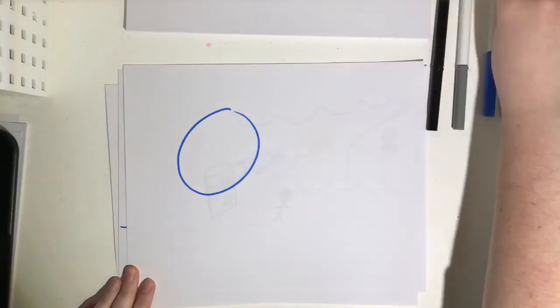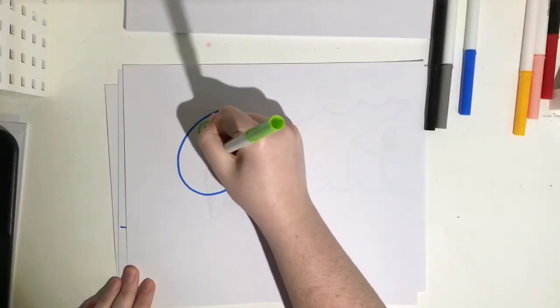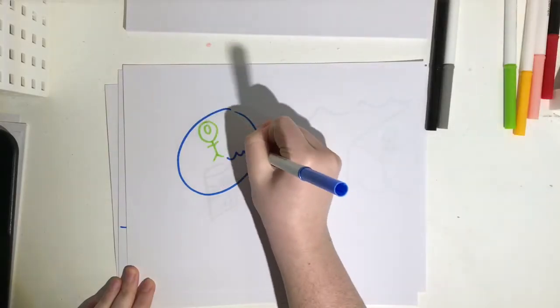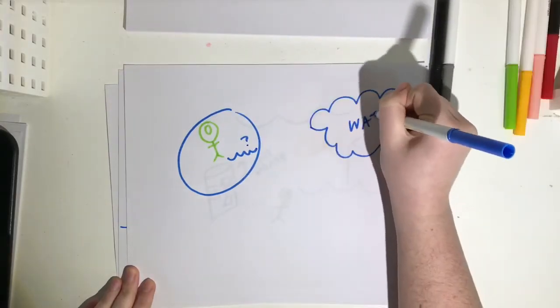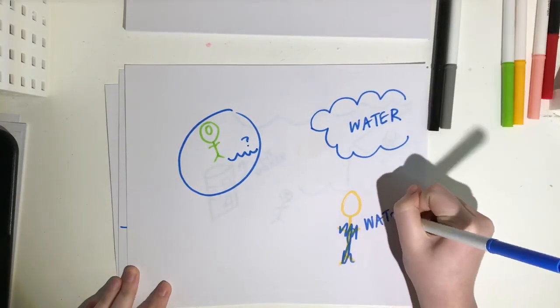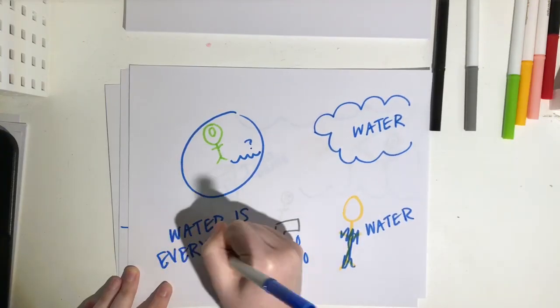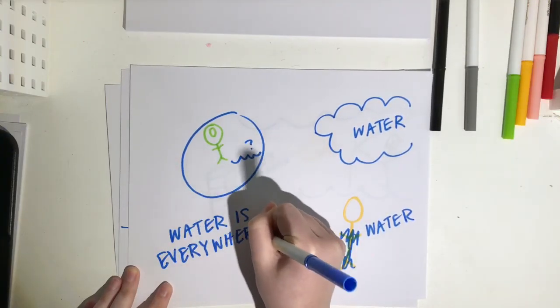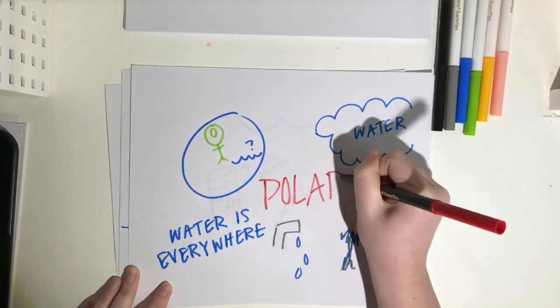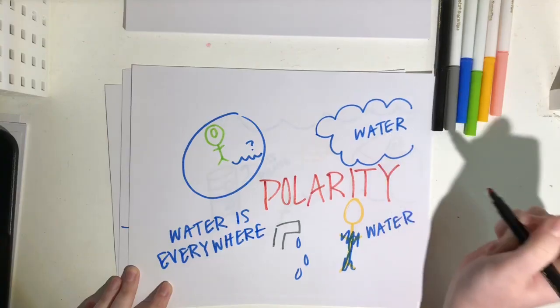When scientists look to see if there's life on other planets, water is one of the biggest things that they look out for. Why? Water is essential to life on Earth. It's in the air, it's in our bodies, it's dripping from your kitchen sink, it's everywhere. Water keeps you alive, and you can all owe all of that to an awesome thing called polarity.